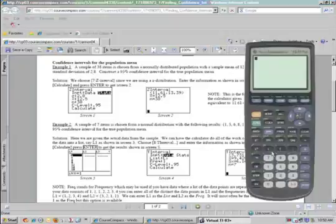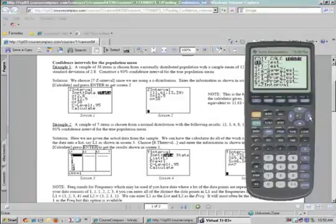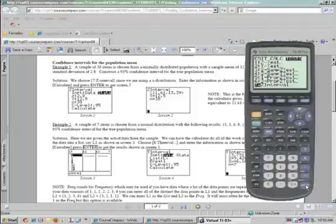If you call up the Calculator and push Stat and move over to Tests, what we're trying to find is the Z interval. If you go down to number 7, this is the one that we want to use for this.